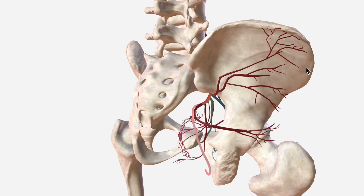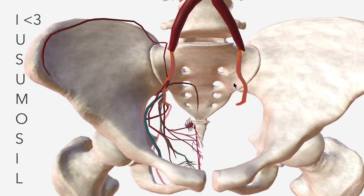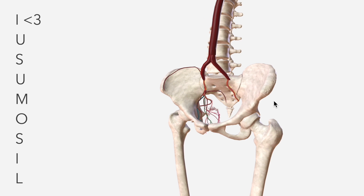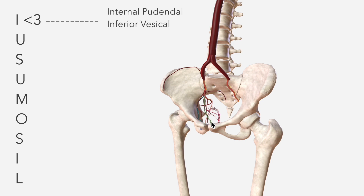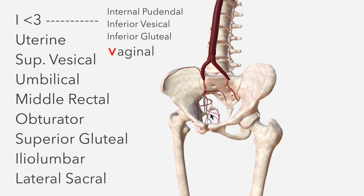To remember the branches of the internal iliac artery, use the mnemonic: 'I love you sumo sil.' The love heart is stylized as a less-than sign and a three. This breaks down as: Internal pudendal, Inferior vesicle, Inferior gluteal (the less-than sign read as a V on its side gives Vaginal), then Uterine, Superior vesicle, Umbilical, Middle rectal, Obturator, Superior gluteal, Iliolumbar, and Lateral sacral.